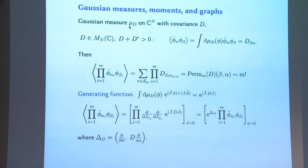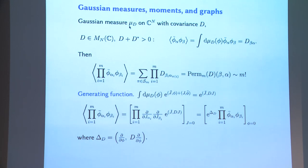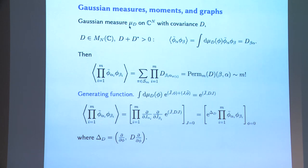You can convince yourself very easily by looking at n=1 that the permanent grows factorially — it's basically the definition of the gamma function. And obviously one can write down a generating function, which is also a Gaussian. Both sides are entire functions of j and j-bar.